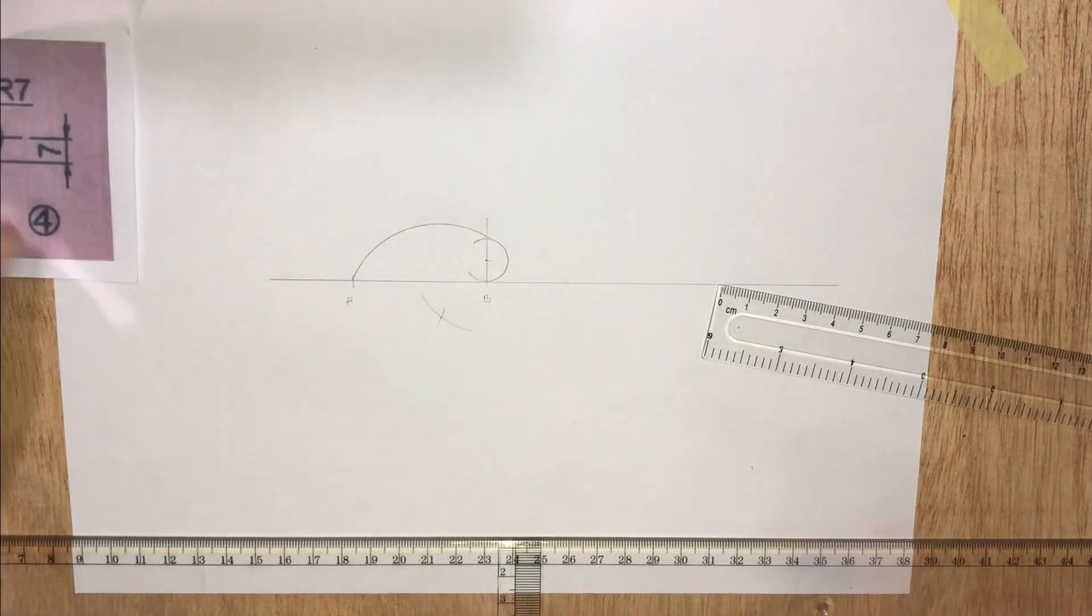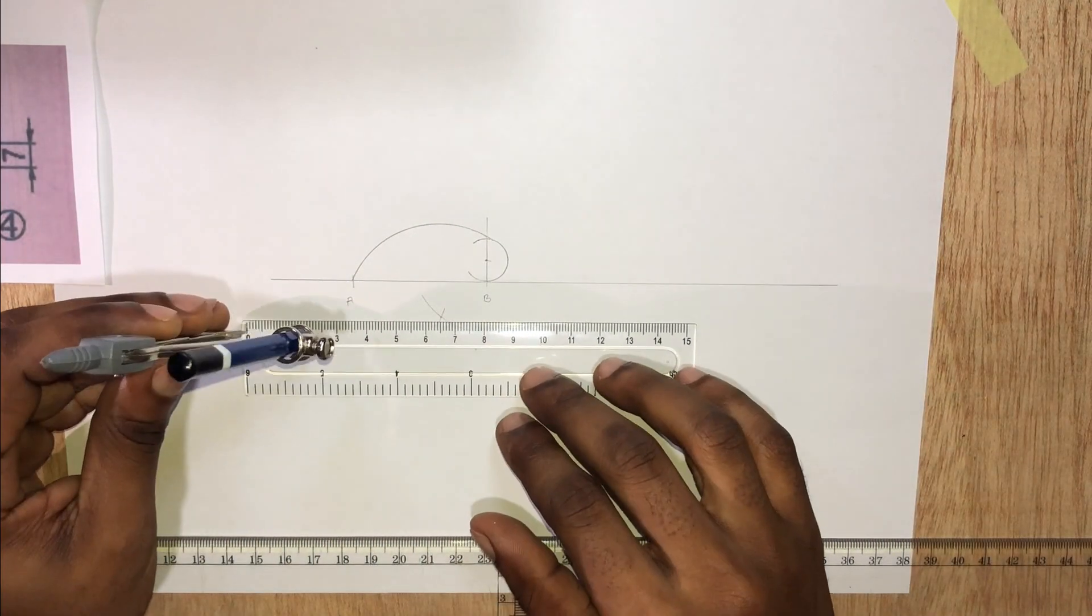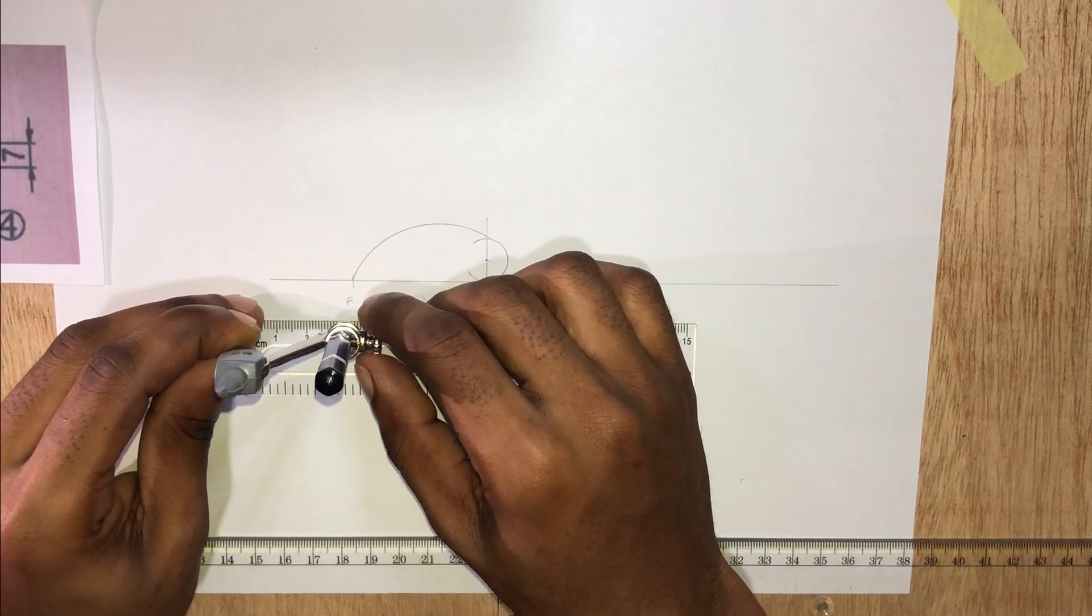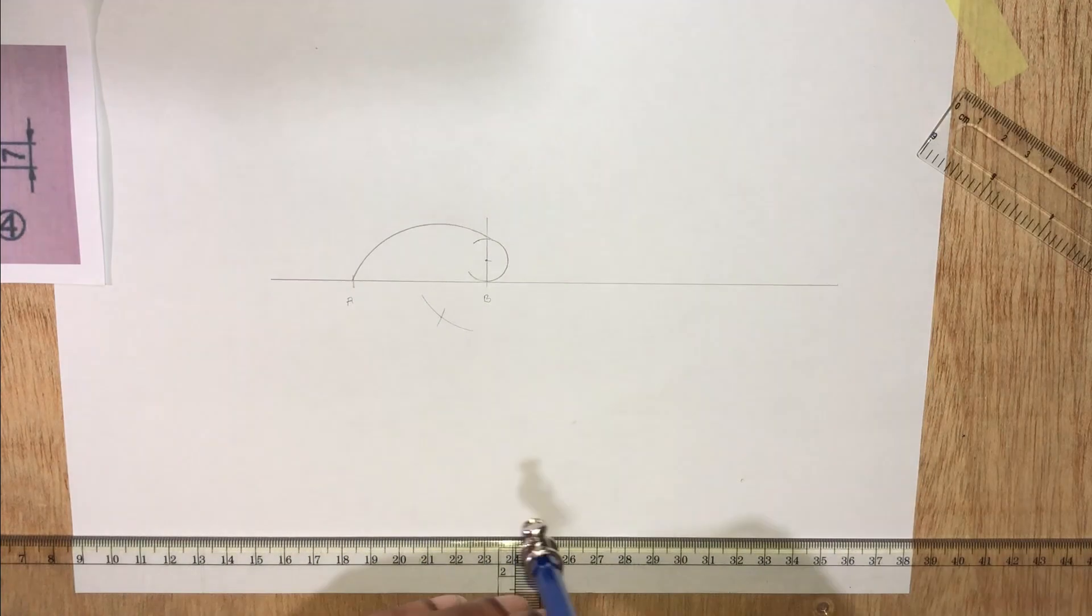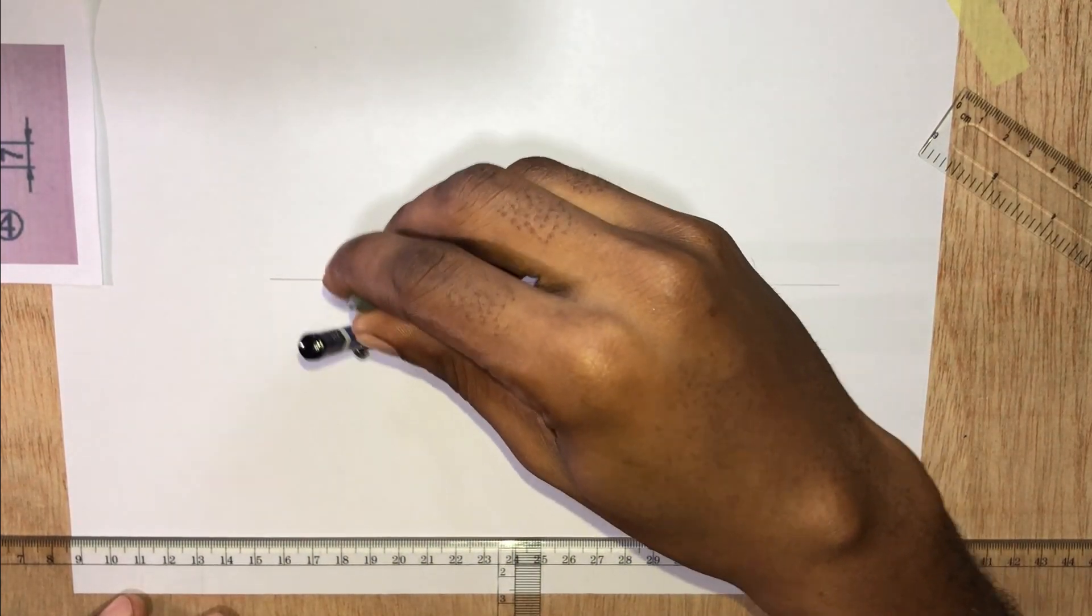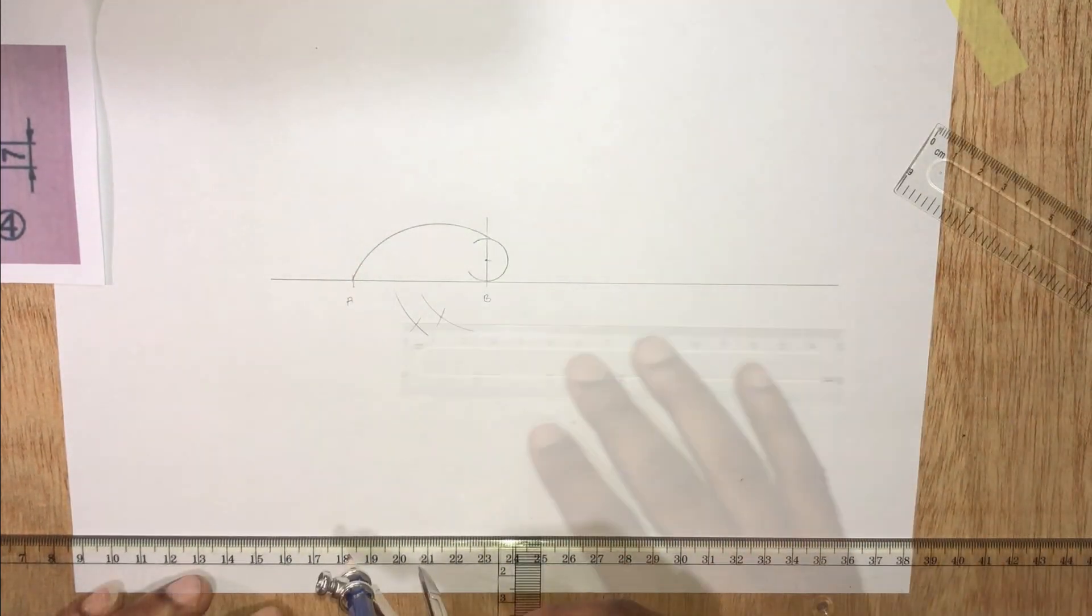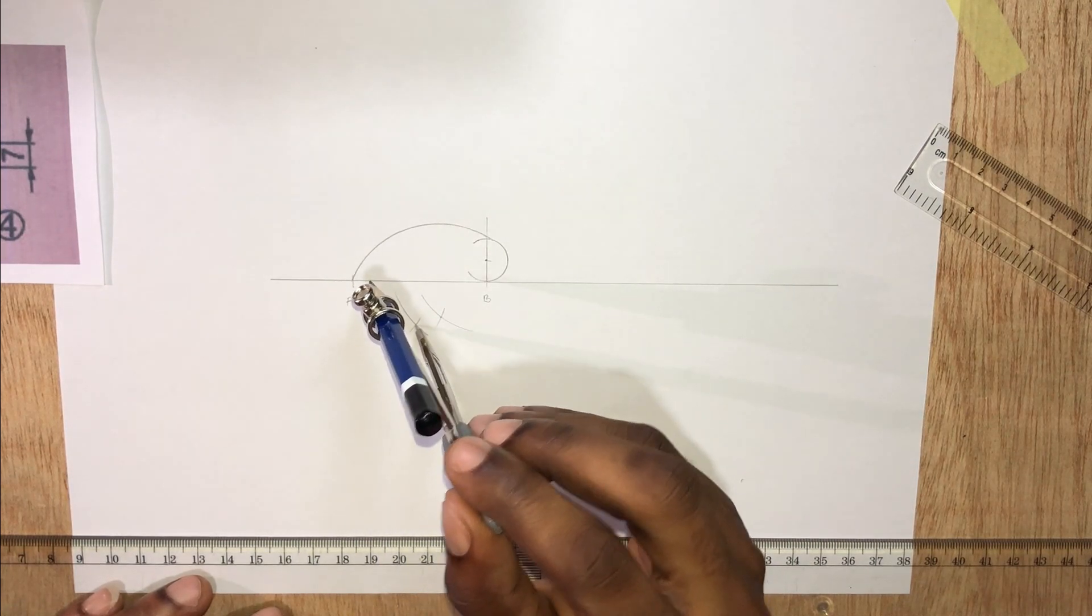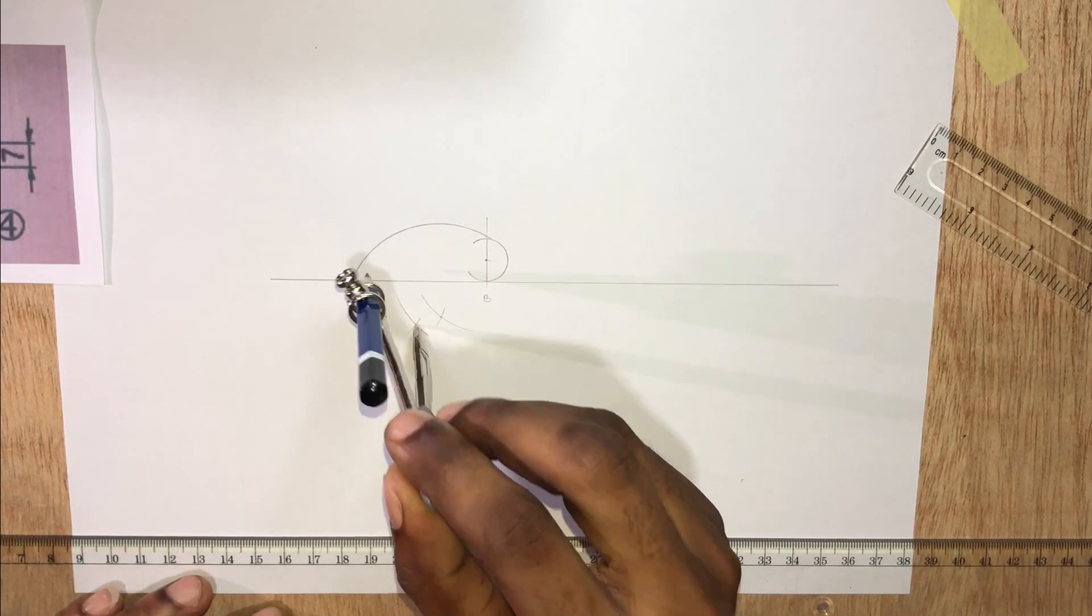With the same radius, stand at this point and draw the circle.